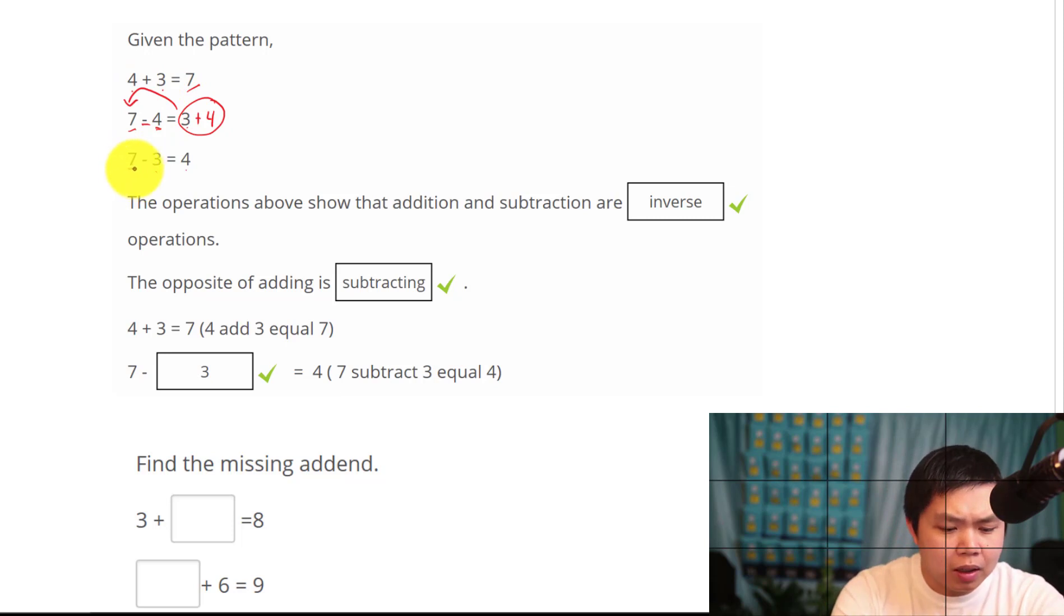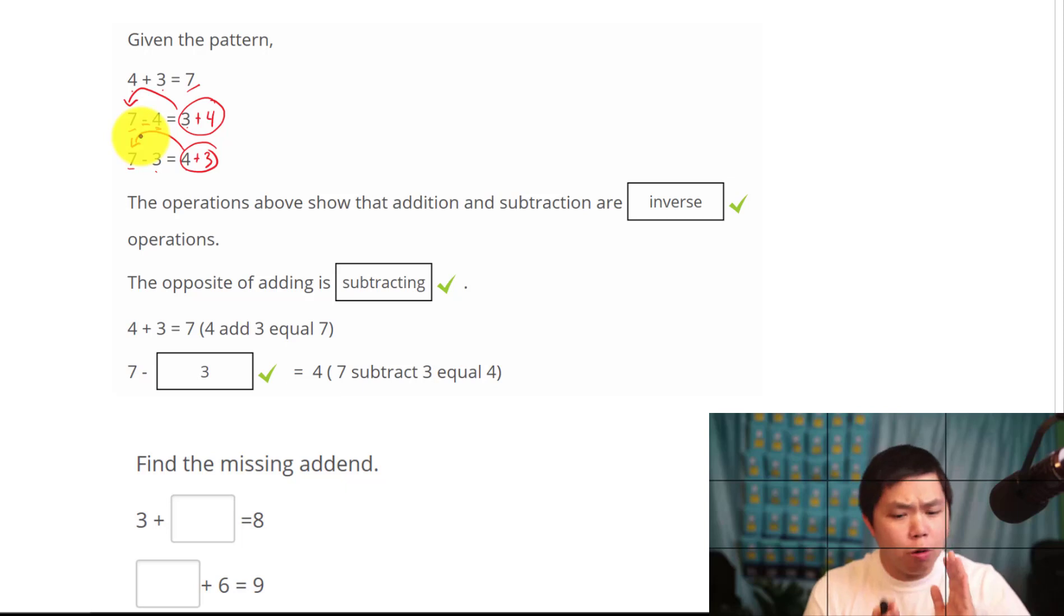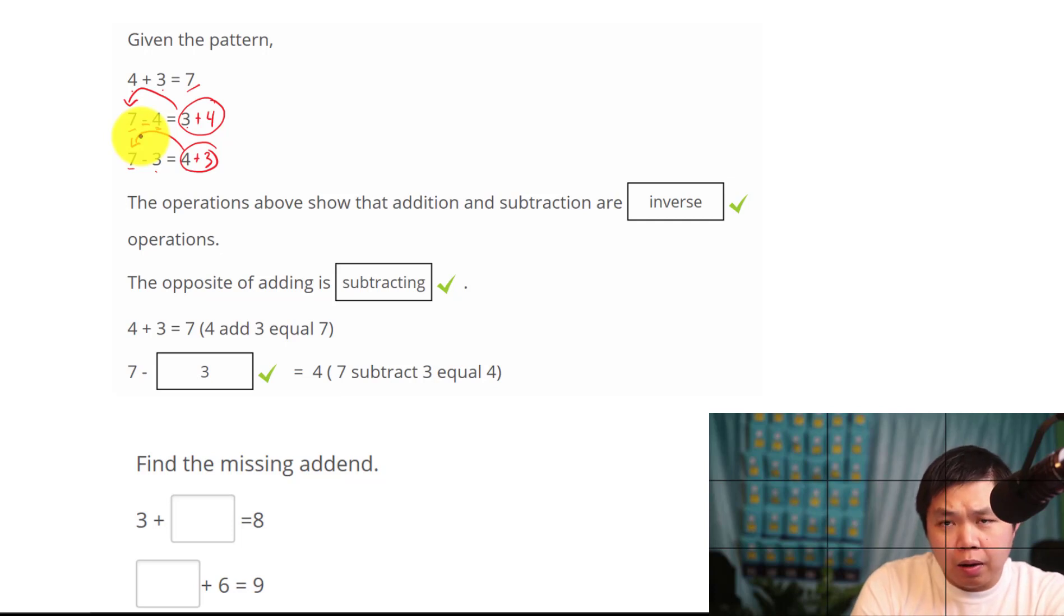And the same thing right here, 7 minus 3 equal to 4. Well what's the opposite of minus 3? Plus 3. That is the same thing as 7. And we are going to look at this relationship to find out what's the missing number. So again, opposite of addition and subtraction.